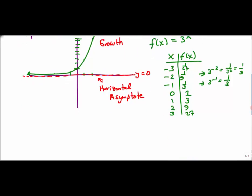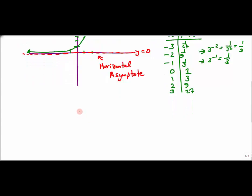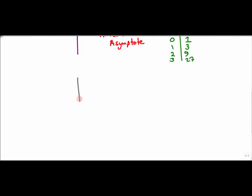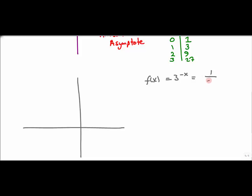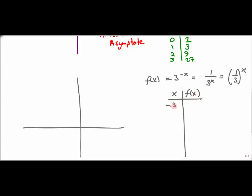Let's look at another example: f(x) = 3^(-x). This is the same as 1/3^x, or (1/3)^x, because distributing x to the numerator gives 1^x = 1, over 3^x. All three of these forms produce the same graph. These values will be a little trickier because everything ends up in the denominator.